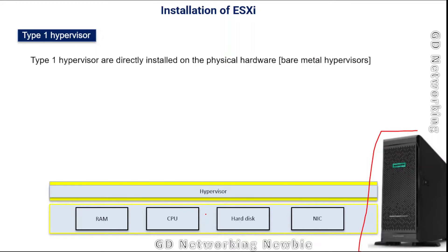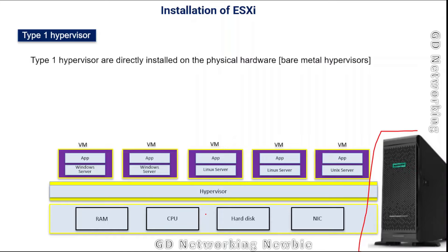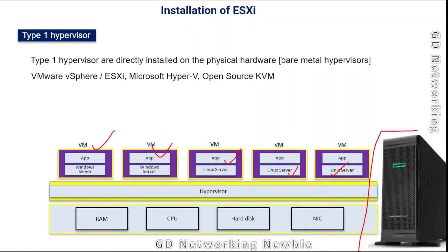This is what we will be doing in this video. On that hypervisor we can create multiple virtual machines, each with its own operating system and application programs. We will be discussing VMware vSphere ESXi specifically, though there are other vendors in the market who also provide type 1 hypervisors. Let's start the installation of the ESXi hypervisor in VMware Workstation Pro.